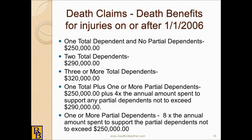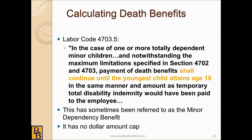Now that we know what the death benefits are, how do we calculate them? Labor Code section 4703.5 says they continue until the youngest child attains the age of 18 — sometimes called a minor dependency benefit. So regardless of those dollar amounts — $320,000 for three or more total dependents — death benefits continue at least until the youngest dependent child reaches age 18, in the same manner and amount as temporary total disability would have been paid. There's no dollar amount cap up until the youngest reaches 18.